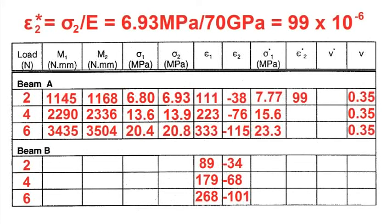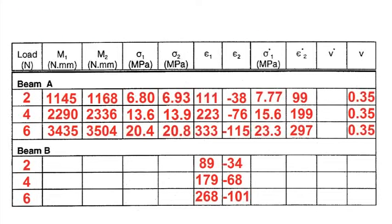Epsilon two star is the experimental strain in a perpendicular direction at strain gauge two. Since we already know the modulus of elasticity, it is simply the stress at point two, or sigma two, divided by the modulus of elasticity.